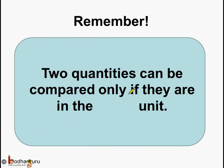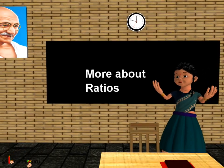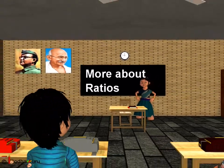Remember, two quantities can be compared only if they are in the same unit. Otherwise we will get incorrect results, like the cat being 10 times taller than the camel, which is obviously wrong. So now you know a lot about ratios. That's all for now. Bye-bye children, see you next time.